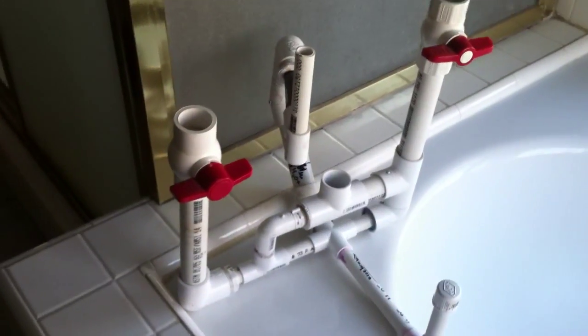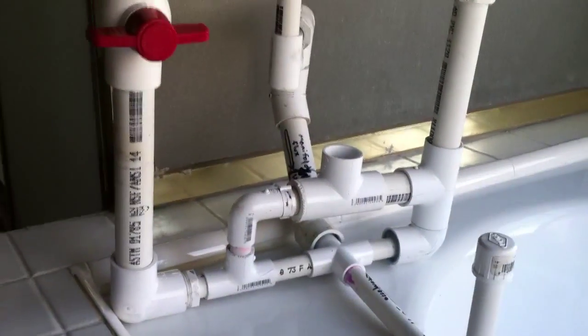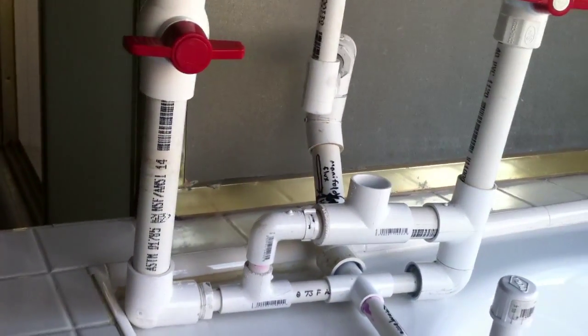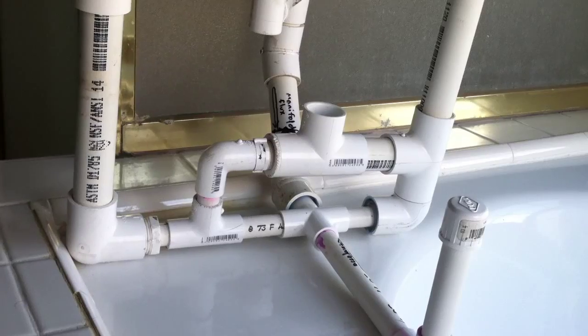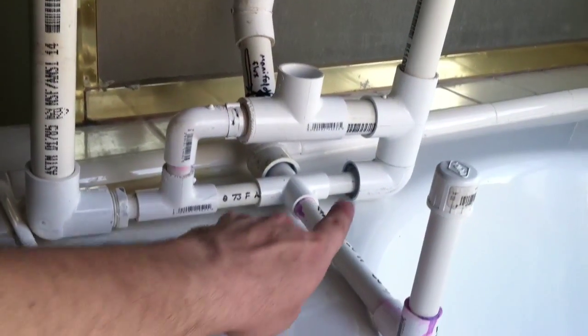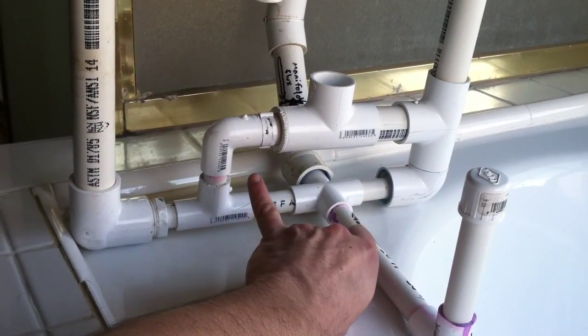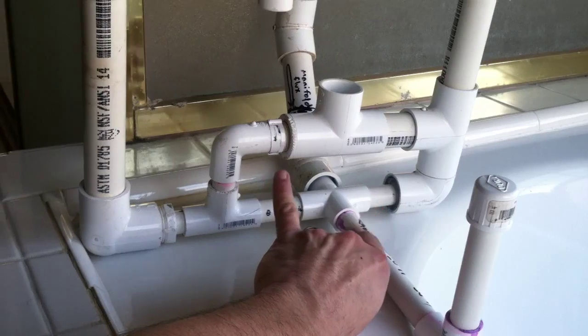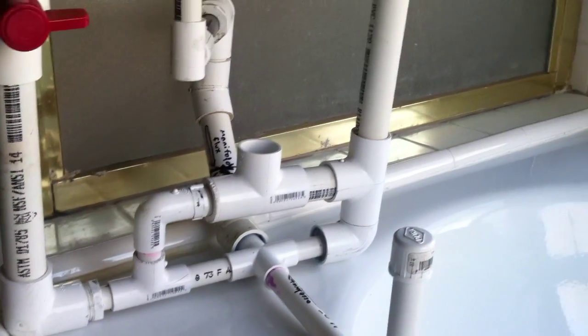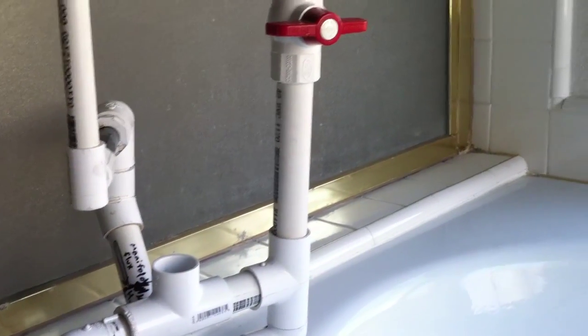I don't know how familiar you are with ram water pumps, but there is an oscillating piston system. Mine is located in between these two joints right here. It'll oscillate between here and then here and then here, just goes back and forth.